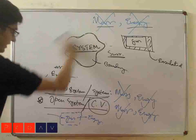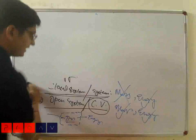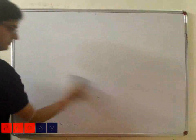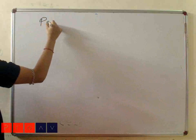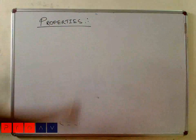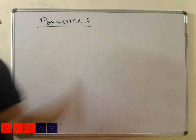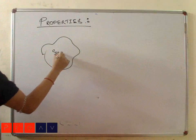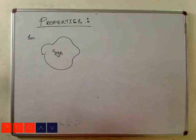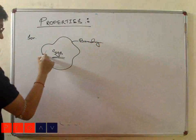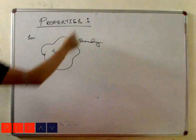For any thermodynamic analysis, we use either open system, closed system, or isolated system. Now it comes to properties. Properties means the characteristics of any system. This is my system with a boundary.